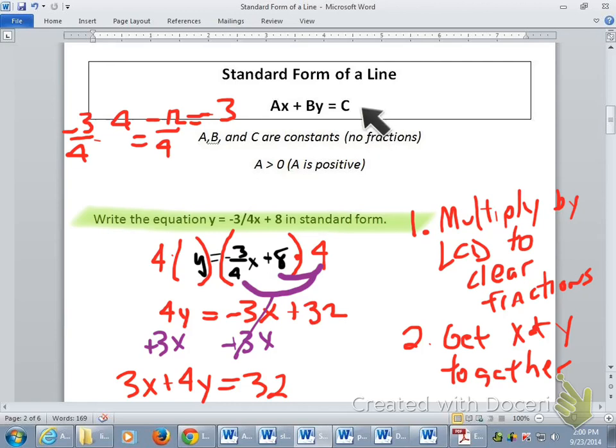Double check to see if we did everything we said we were going to. Are the x and the y together? Are a, b, and c integers with no fractions? That should say integers, not constants. And then is a positive? And a is positive. So we're done.